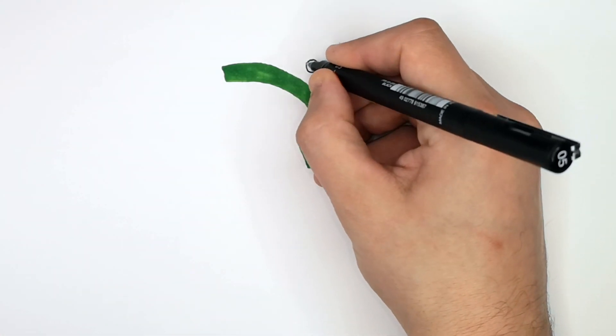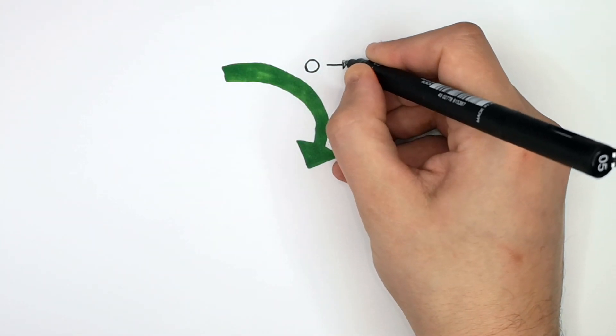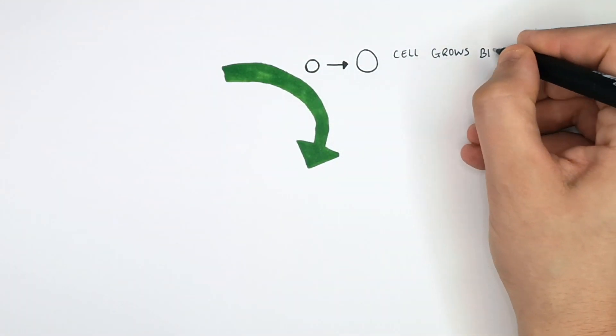The first stage of cell cycle is preparing the cell for mitosis. Because one cell is going to divide into two genetically identical cells, the cell firstly needs to grow bigger.